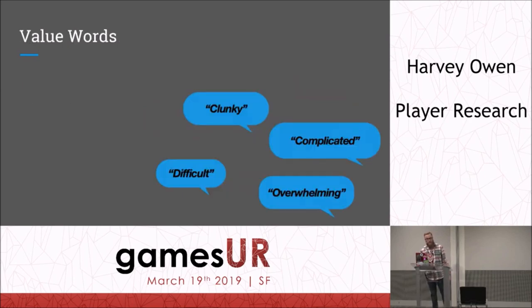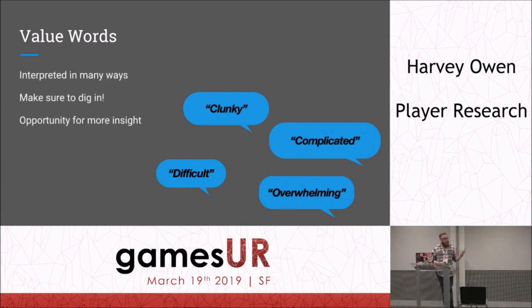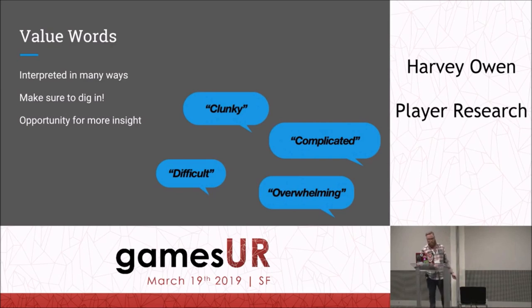The next things to keep an eye out for are value words — things like 'clunky' or 'complicated,' or anything that appears meaningful but is wide open to interpretation. These are your opportunities to dig in — the doorways for real insight. If a player says 'combat felt a little bit clunky,' that should be a big red flashing light saying: ask more about combat. These are your real opportunities for insight.